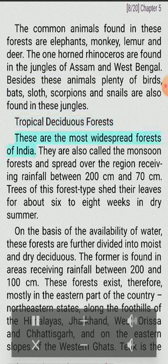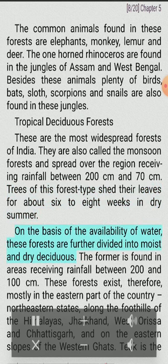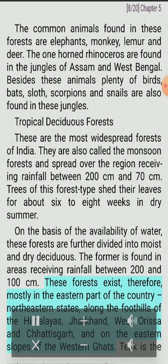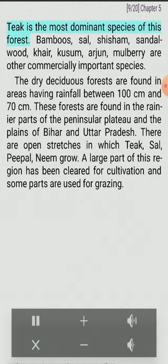Tropical Deciduous Forests: These are the most widespread forests of India, also called the monsoon forests. They spread over the region receiving rainfall between 200 and 70 centimeters. Trees of this forest type shed their leaves for about 6 to 8 weeks in dry summer. On the basis of the availability of water, these forests are further divided into moist and dry deciduous. The moist type is found in areas receiving rainfall between 200 and 100 centimeters, mostly in the eastern part of the country — northeastern states, foothills of the Himalayas, Jharkhand, West Orissa, Chhattisgarh and the eastern slopes of the Western Ghats.